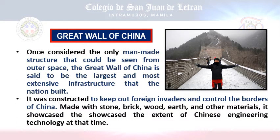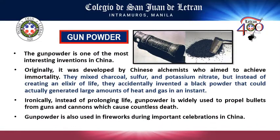Next is the Great Wall of China, which is the only man-made infrastructure that can be seen from outer space. It was constructed for safety and protection, especially to keep out invaders from entering China. These walls were made of stone, bricks, wood, earth, and other materials.